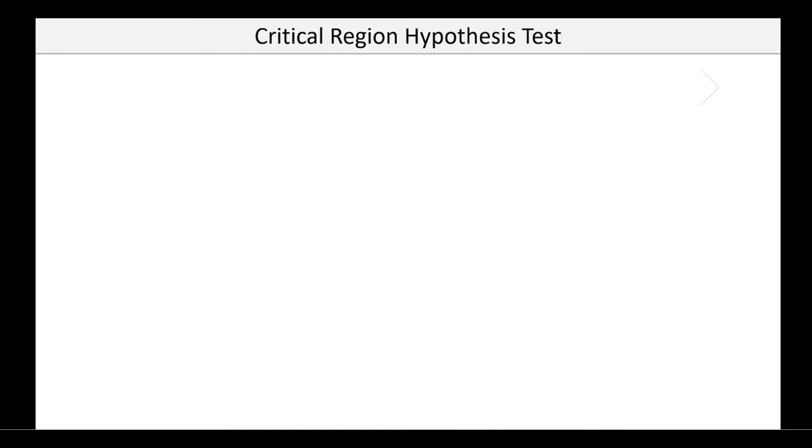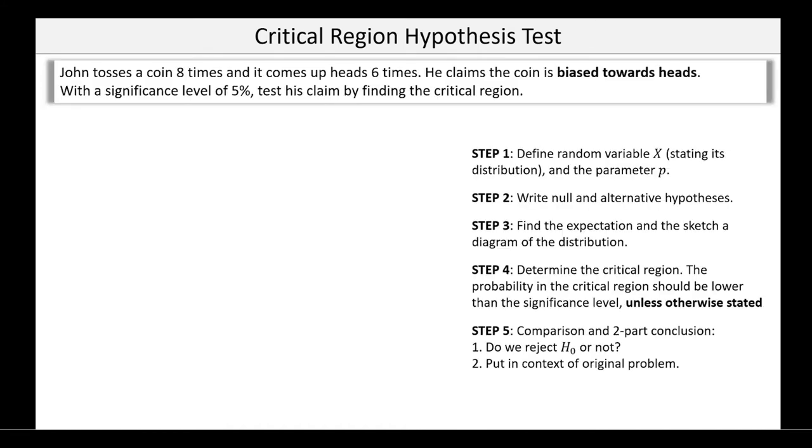Okay, let's have a look at an example case. Here, we're told that John tosses a coin eight times, and it comes up heads six times. I'm actually going to ignore that six for now. I don't want to use that until the very end. I'm happy to even pretend that I didn't even know it was six. He claims the coin is biased towards heads, significance level of five percent, we want to test his claim, and here we've been instructed to use the critical region technique, as you often will be in an exam question.